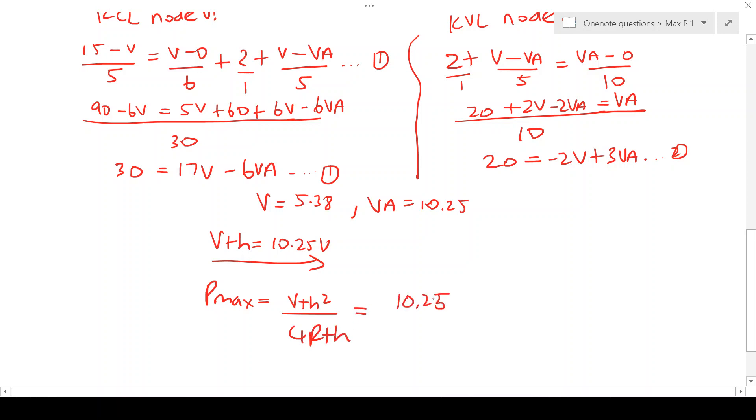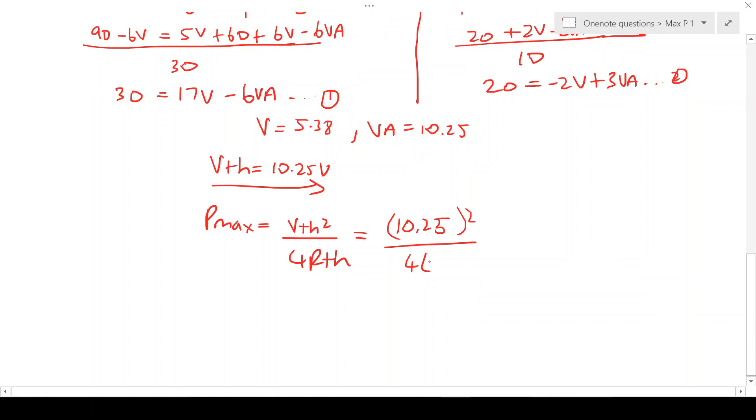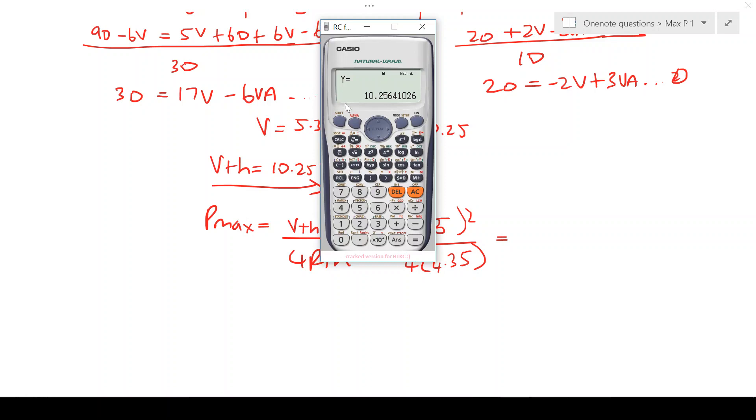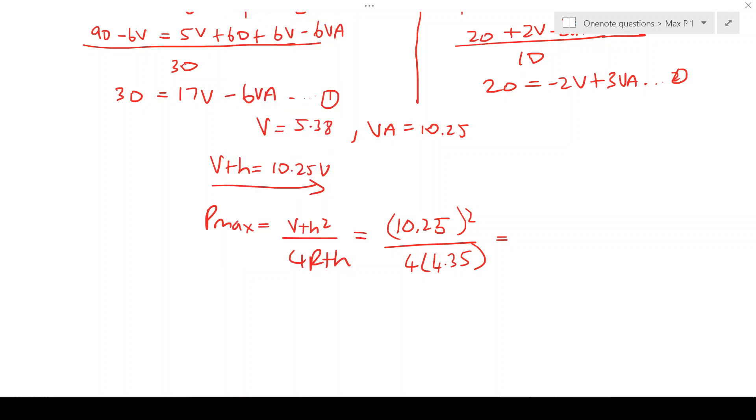This is going to give us 10.25 squared over 4 times the resistance we calculated of 4.35 ohms. That gives us a value of 6.038 watts and that's the value of the maximum power transfer.